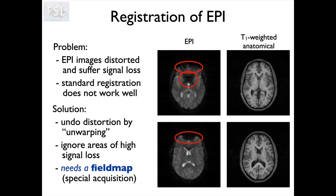Registration of EPI is more tricky than other things because EPIs suffer from both signal distortion — that is, geometric distortion where signal is not where it should be — and also signal loss, which means we have some areas where we've just lost signal. We end up with black patches because the magnetic field, which should be nice and uniform at three tesla, needs to be equal everywhere for good imaging, but it's not exactly equal everywhere, and when we're doing EPI imaging we're particularly sensitive to changes in that.